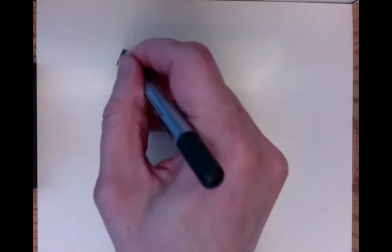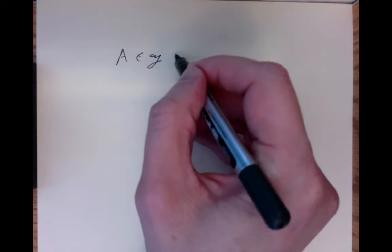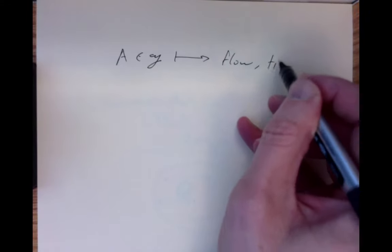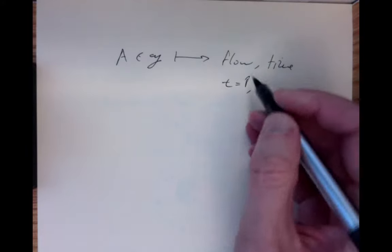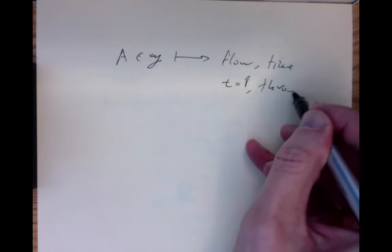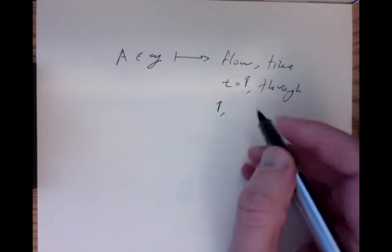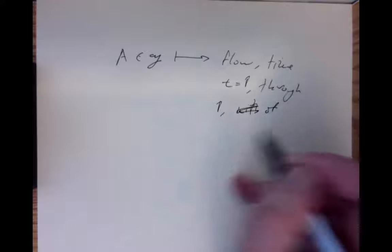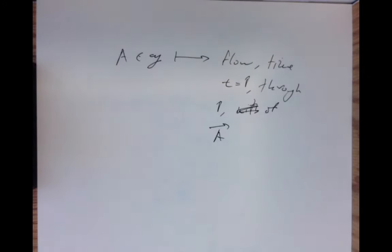This encourages us to define a smooth map called the exponential map, defined as follows. We take any element of the Lie algebra and map it to the flow at time t equals 1 through the point 1, with velocity given by the left-invariant vector field corresponding to it. That's what we'll call the exponential map — it maps a to a point we'll call e to the a, and it's well-defined.